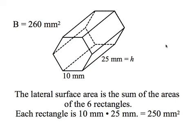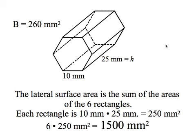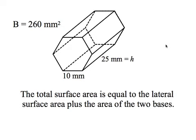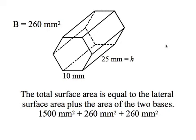Now let's look at the surface area — starting with the lateral surface area. There are six rectangles in this prism, and since it's a regular hexagon with each side 10 millimeters, each rectangle is 10 millimeters by 25 millimeters, or 250 square millimeters. With six rectangles, the lateral surface area is 6 times 250, or 1,500 square millimeters. The total surface area adds the two hexagonal bases — each 260 square millimeters — to the 1,500, giving a total surface area of 2,020 square millimeters.